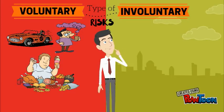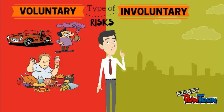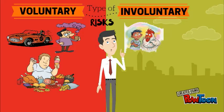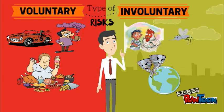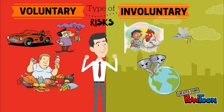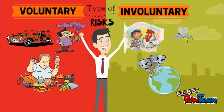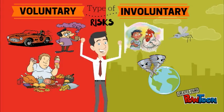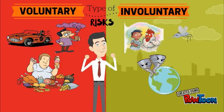Whereas in involuntary risk, you did not intend to risk yourself, but the risk is all around you and you have no control over it. For example, a chickenpox outbreak, dengue fever, and natural disasters. Therefore, voluntary risks are the risks that you can control, but involuntary risks are the risks that you cannot control.